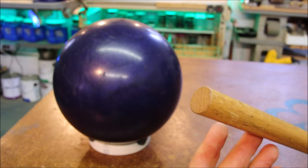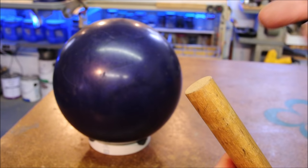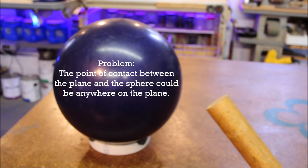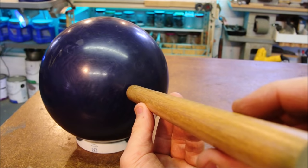If you'll pretend that this is a pool cue for a moment, this pool cue is flat at the end, which is to say that it's a plane. And when a plane comes in contact with a sphere, it also touches in one point. But there's a problem with this.